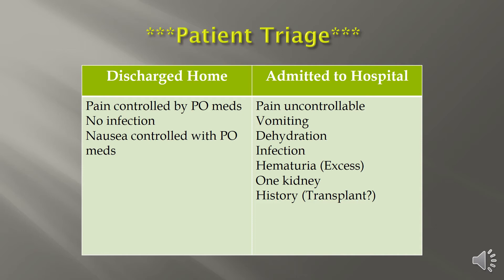There are two types of patients who present with stones. Patients who may be discharged home from the ER include those whose pain is controlled by oral medications, no infection is noted, and nausea can be controlled with PO medications. Patients who require hospital admission include those with uncontrolled pain needing IV pain medication, severe vomiting leading to dehydration, infection, excess hematuria, only one kidney, or a prior kidney transplant — because we don't want an obstruction causing bilateral kidney breakdown.